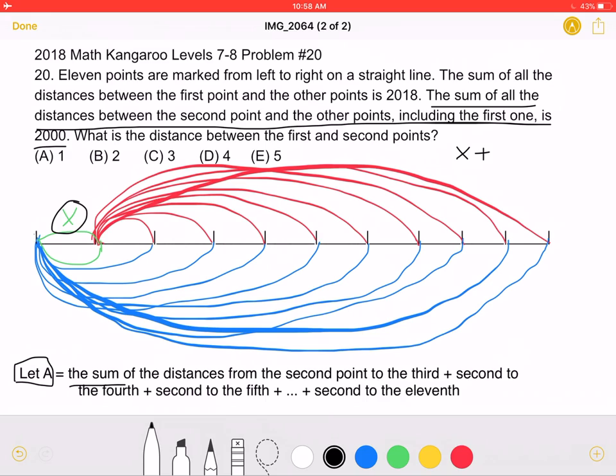A is the sum of the distances from the second point to the third, plus the distance between the second to the fourth, plus the distance from the second to the fifth, and so on, until we add the distance between the second and eleventh points.